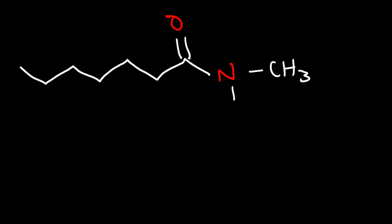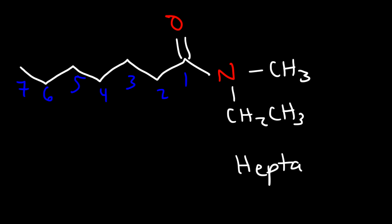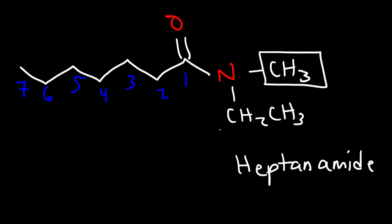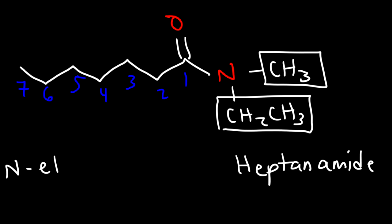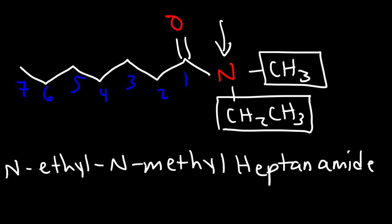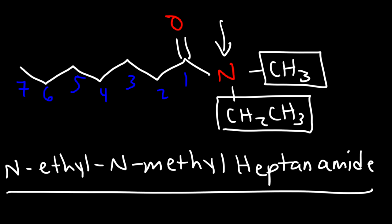Go ahead and try this one. We have a tertiary amide with different substituents. We count the longest chain of the amide — a seven-carbon chain — so instead of saying heptane, replace the E with amide: heptanamide. We have a methyl group on the nitrogen and an ethyl group on the nitrogen. Ethyl comes before methyl alphabetically, so this is N-ethyl-N-methylheptanamide.